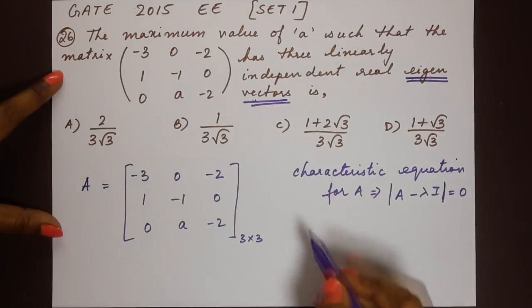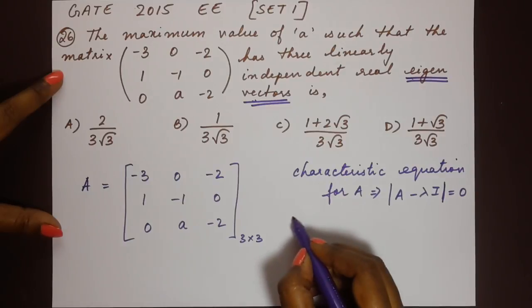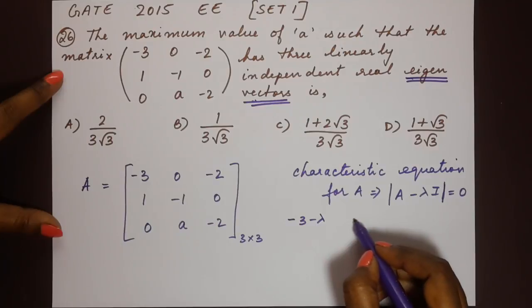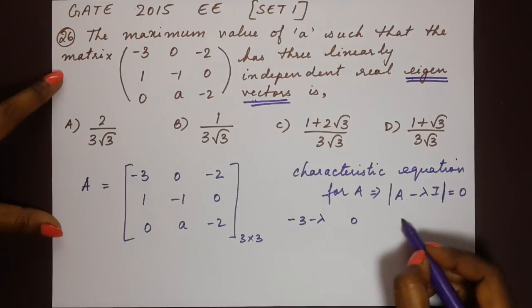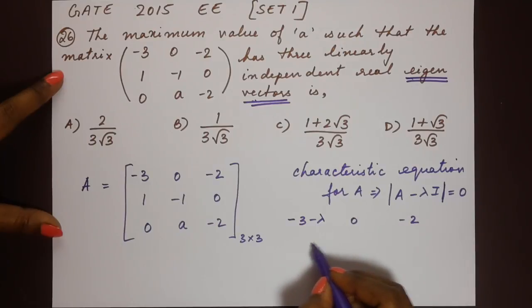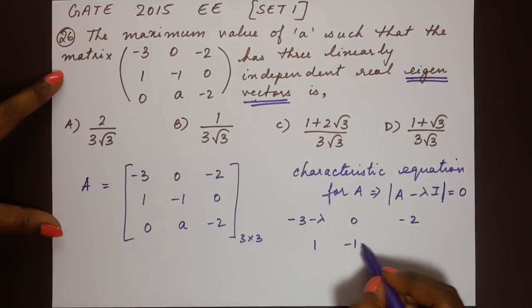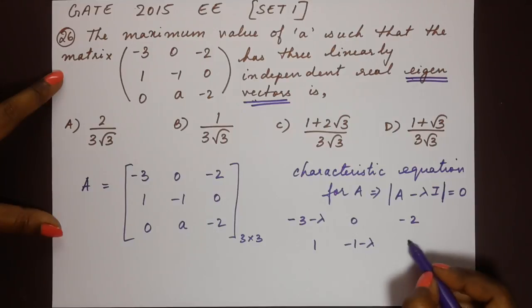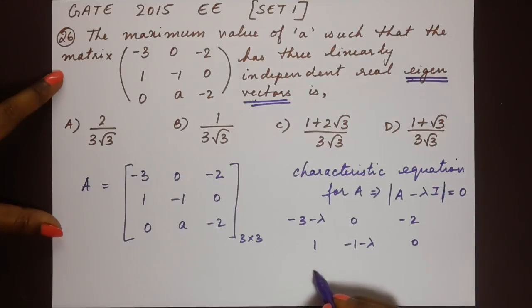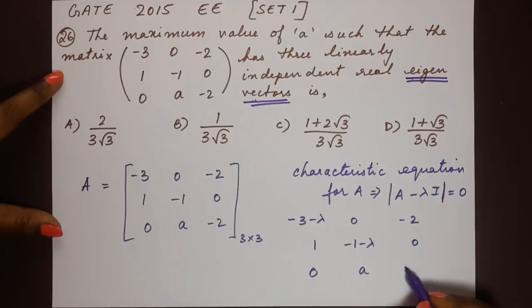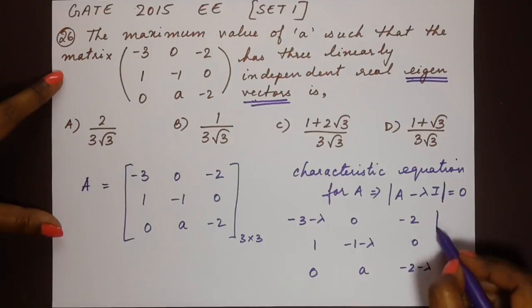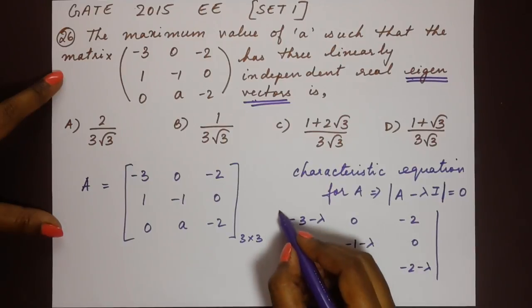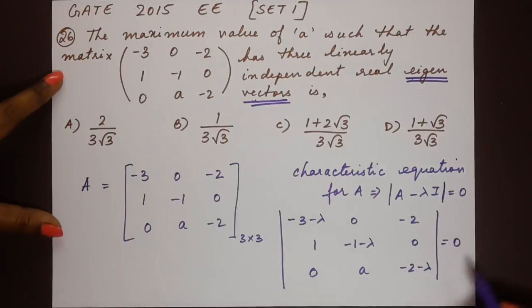Applying this to the matrix, A minus lambda I gives us: minus three minus lambda, zero, minus two in the first row; one, minus one minus lambda, zero in the second row; and zero, A minus two minus lambda in the third row. The determinant of this equals zero according to the characteristic equation.